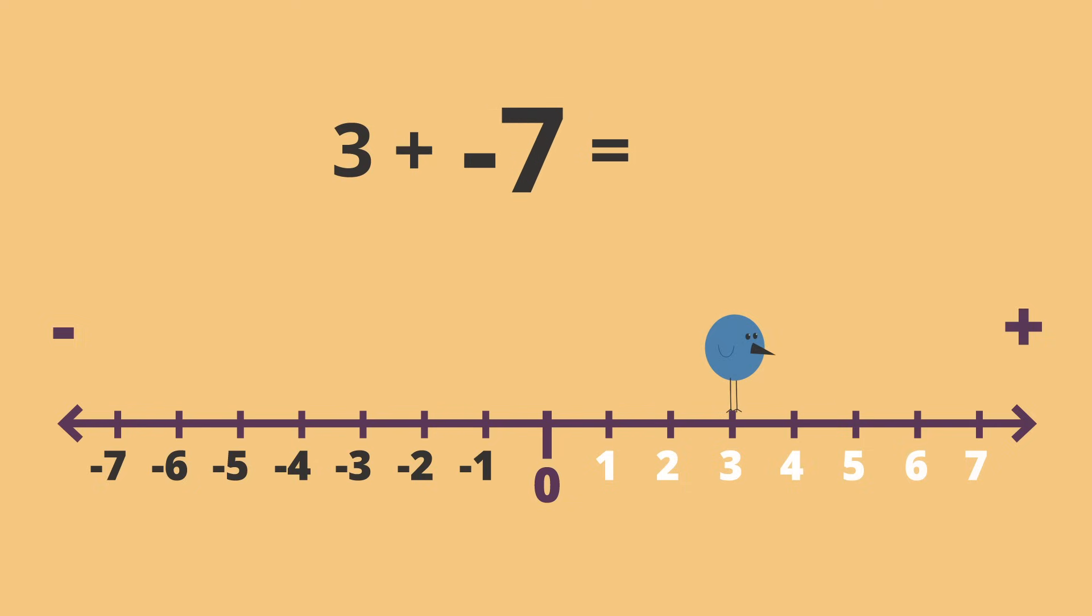Our second number tells us how far to move and which direction to move. We'll move forward if it's positive, and backwards if it's negative. Since our second number is a negative 7, our little bird is going to move backwards 7 spaces.